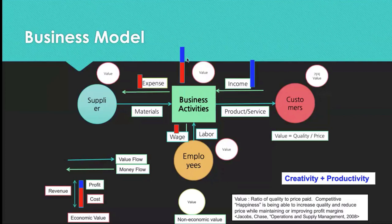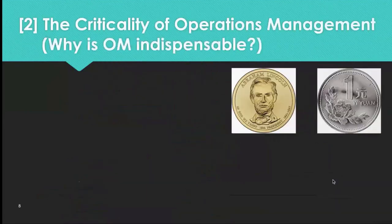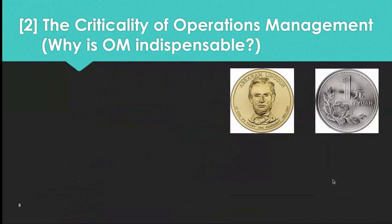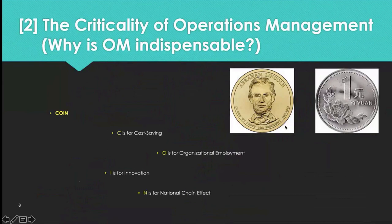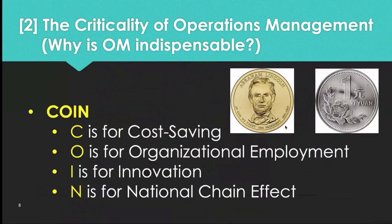By meeting customers' needs through creativity, efficiency, and productivity, we achieve the goal of value creation. The second topic is the criticality of operations management — why is operations management indispensable in business? I summarize it as COIN: C is for cost saving, O is for organizational employment, I is for innovation, and N is for national chain effect.